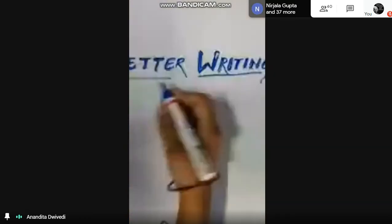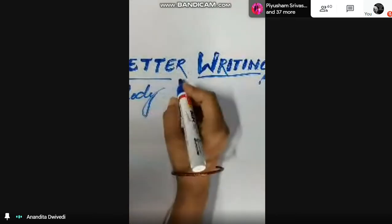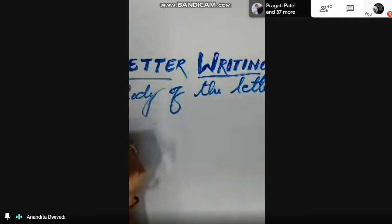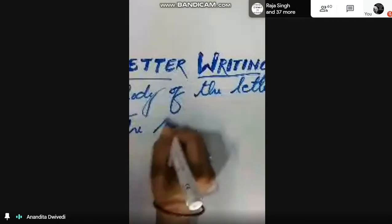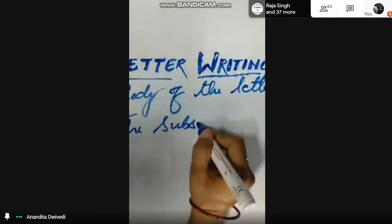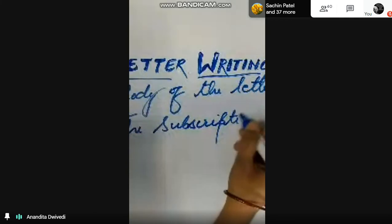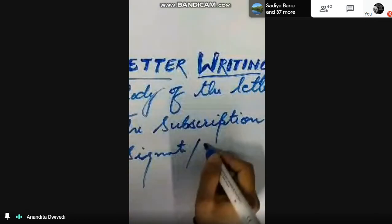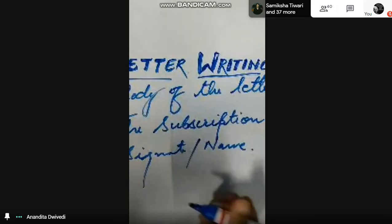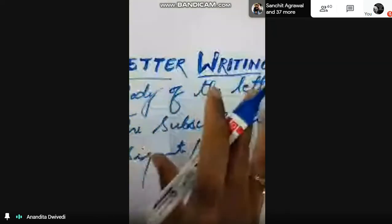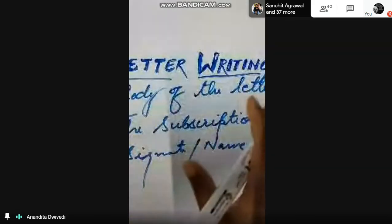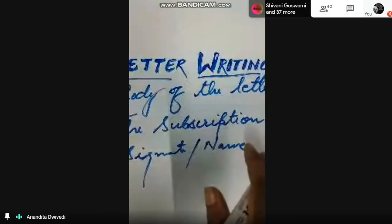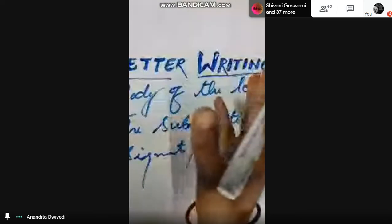Introduction will come under body of the letter. Next we have the body of the letter, and then after the body of the letter we have the subscription, that is the closing. After subscription you have to do your signature and write your name. So these are the parts which are included in a formal letter — when you write a formal letter you have to include all these things.